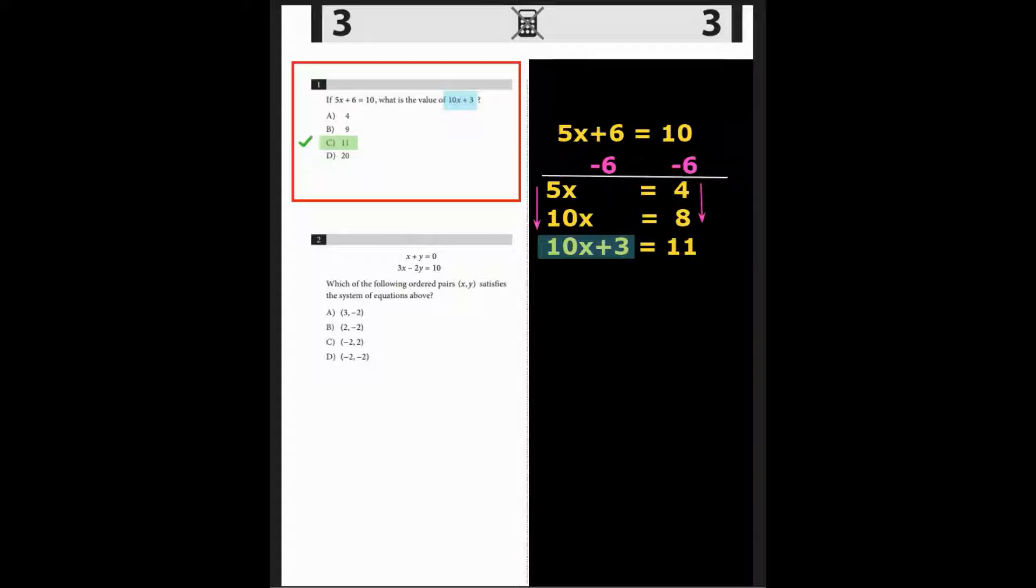To solve this equation, first I noticed that 5x is becoming 10x in the new expression. So, subtracting 6 first, I get 5x equals 4, which I then double on both sides, so 10x equals 8, and then adding 3, the new expression, 10x plus 3, equals 11. The correct answer was C.